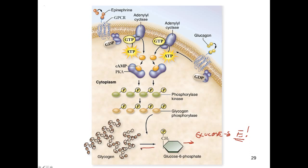We talked before about a phosphorylation cascade that leads to the formation of glycogen from glucose — the storage form. Now we're looking at how glucose is released from glycogen in response to adrenaline. Epinephrine can cause a fight-or-flight response — if you turn around and find a bear behind you, there will be an immediate release of epinephrine that hits target tissues and causes production of lots of glucose, which you might need to fight or flee.